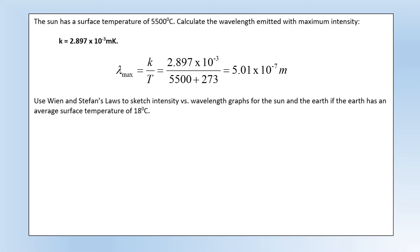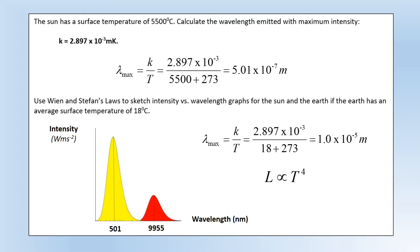Use Wien and Stefan's laws to sketch an intensity versus wavelength graph for the sun and the earth if the earth has an average surface temperature of 18 degrees. So the first thing we can do is use the same process we've just used to figure out where the maximum for the earth is, and we can see it's about somewhere between 100 times bigger than that of the sun. Using Stefan's law we know that the sun will be emitting a lot more power. So putting those two things together we can draw a graph that looks like this. So the red one is for the earth, we can see its wavelength there. If you actually calculate it's like 9955 nanometers and its peak is going to be lower because it's not as hot, whereas the sun is much hotter so its peak is much higher and its peak is much shorter wavelength.